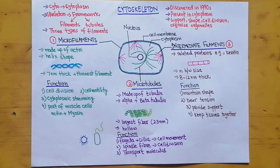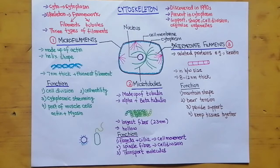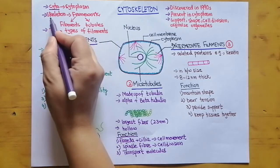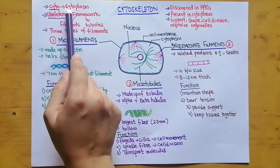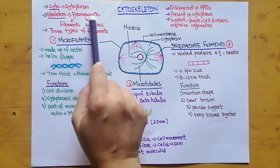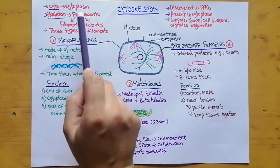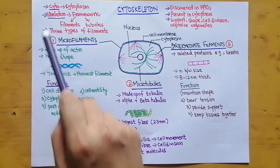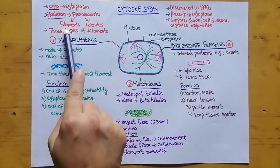Welcome back learners. Today's lesson is about the structure and function of the cytoskeleton. The word cytoskeleton is made up of two words: cyto and skeleton. Cyto comes from cytoplasm, which is the thick liquid present inside the cell, while skeleton means framework — just like the human skeleton gives structure to the body, the cytoskeleton gives shape or structure to the cell.